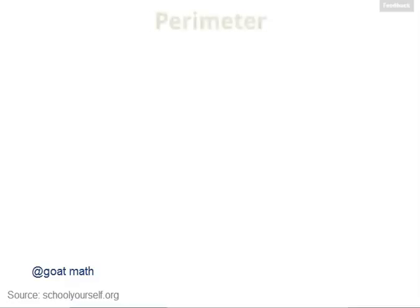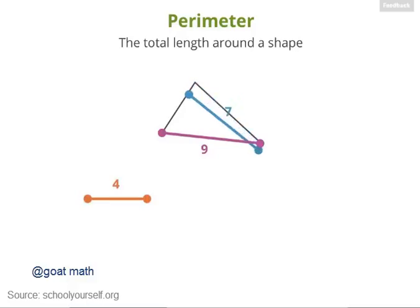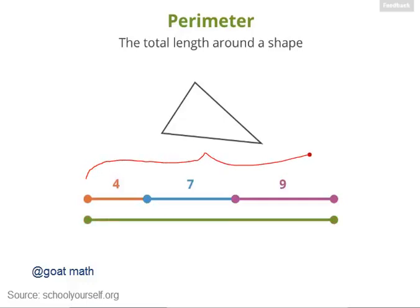The perimeter of a shape is the total length around it. For example, suppose we have a triangle and its sides have lengths of 4, 7, and 9. If you walked in a loop around the outside of this triangle, the total distance you've traveled is 4 plus 7 plus 9, which equals 20. So the perimeter of this triangle is 20.